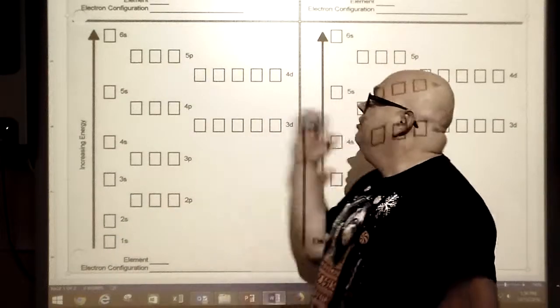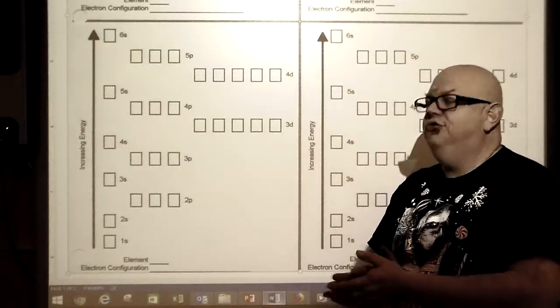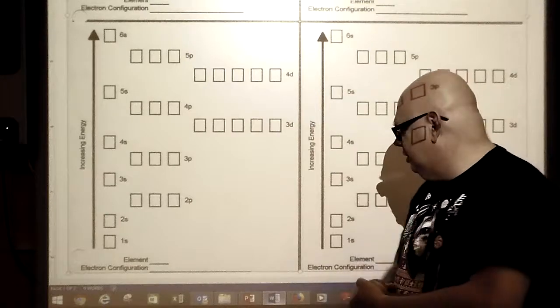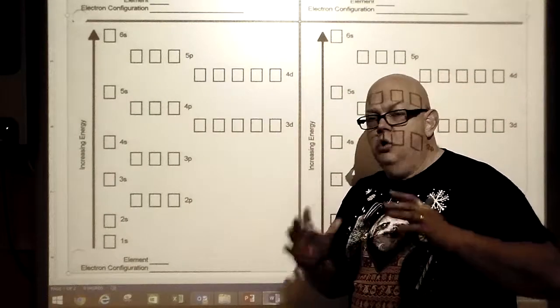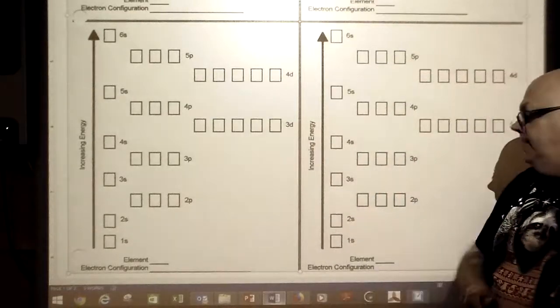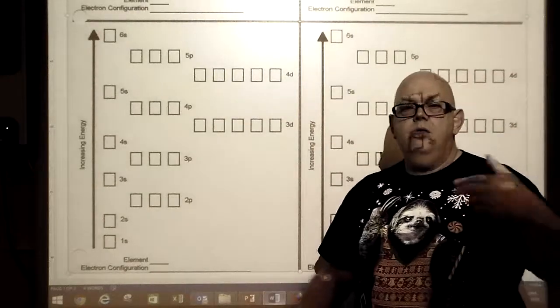Okay, this is dealing with chapter 4. We're here to learn about electron orbital notation and electron configuration, so we're going to run through some examples and hopefully you'll pick up something along the way.